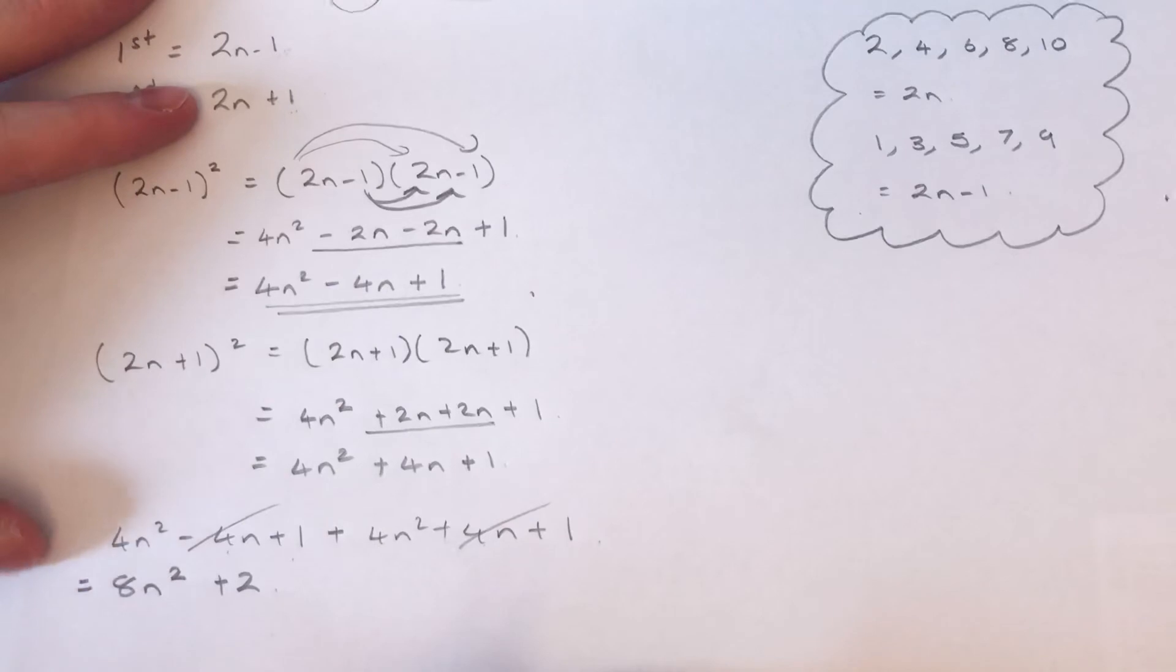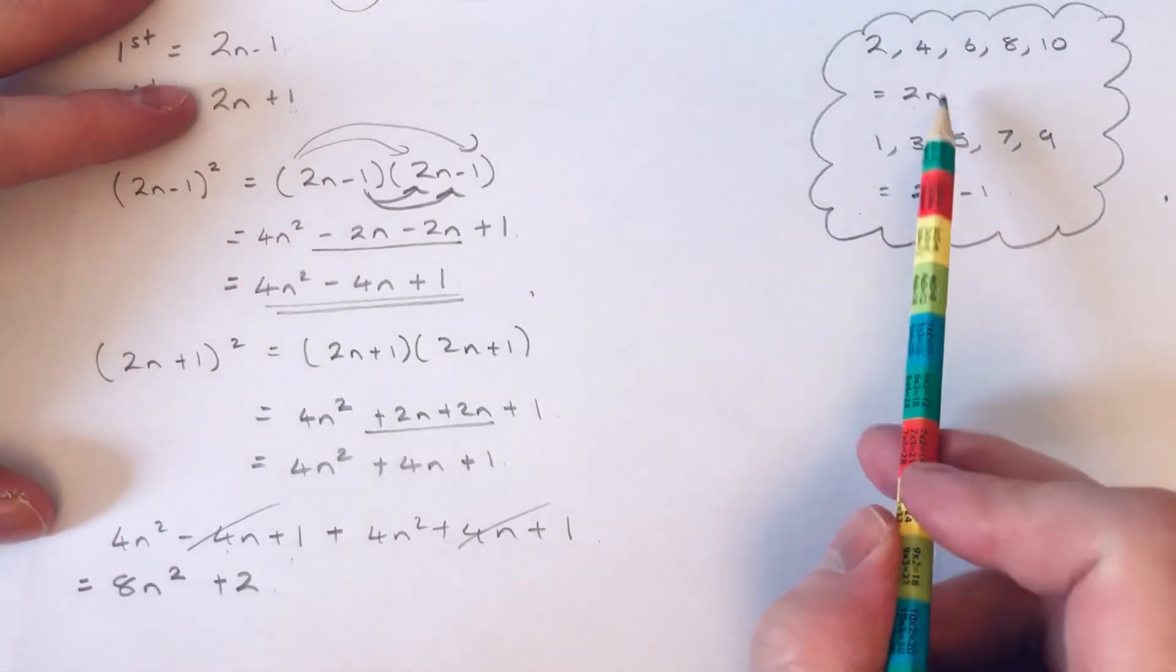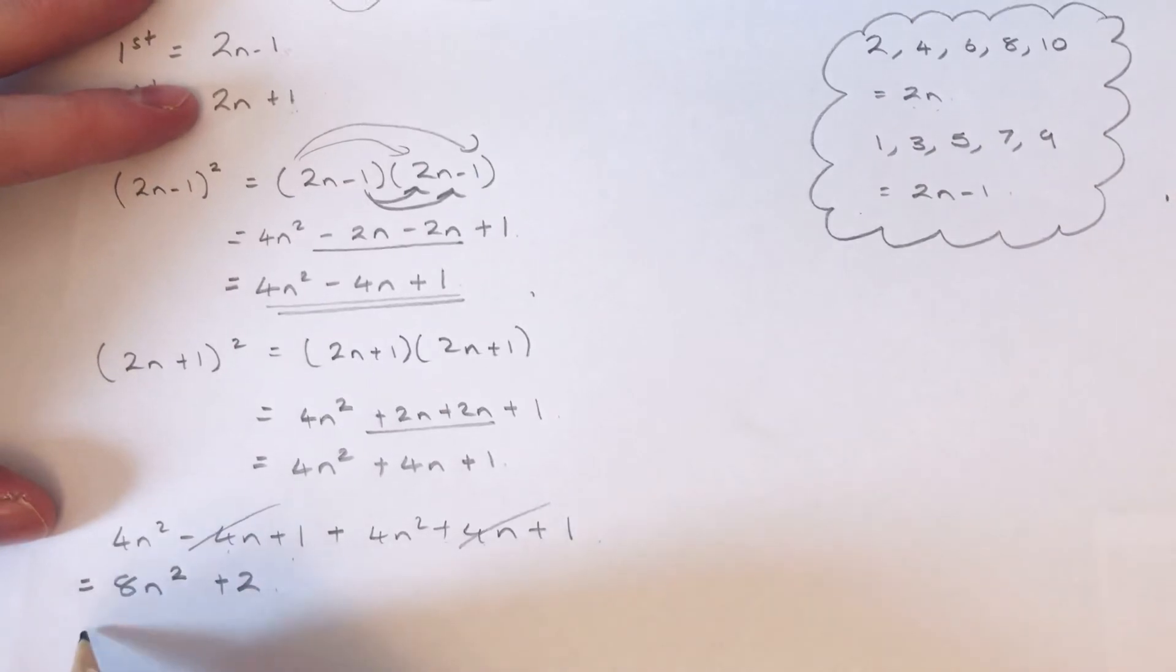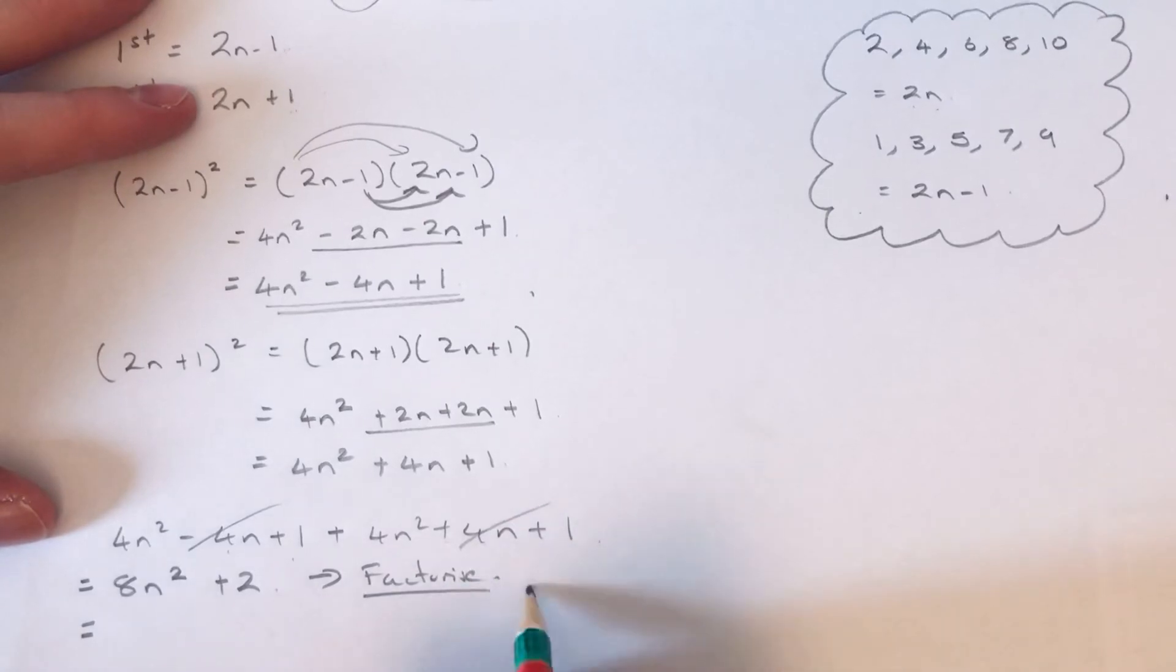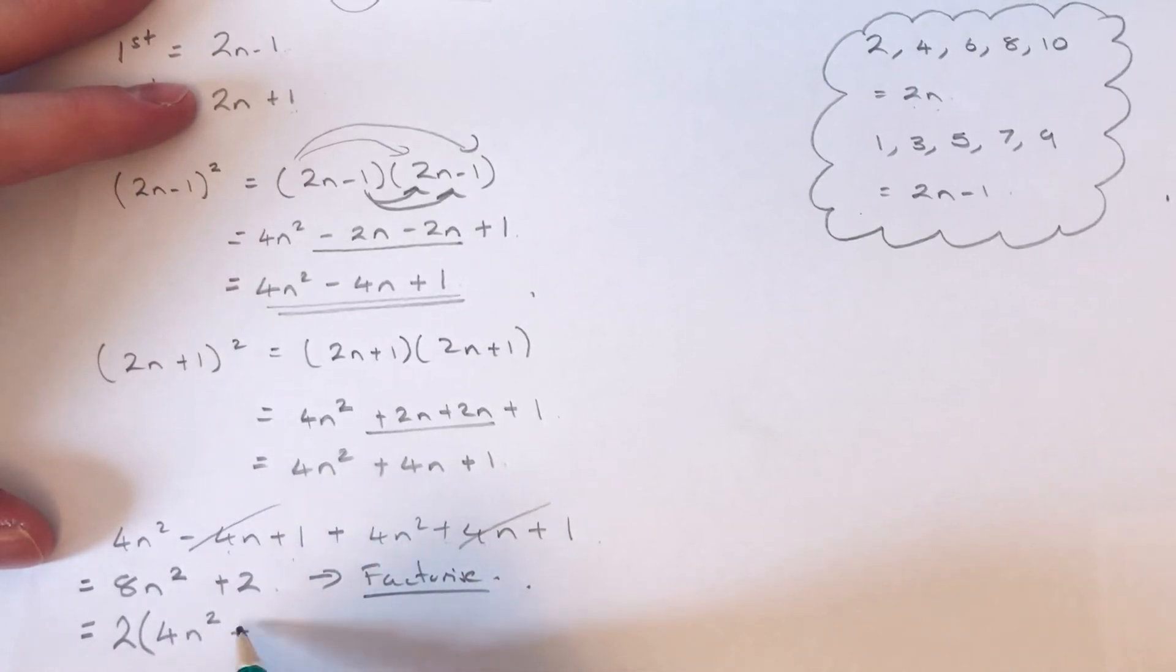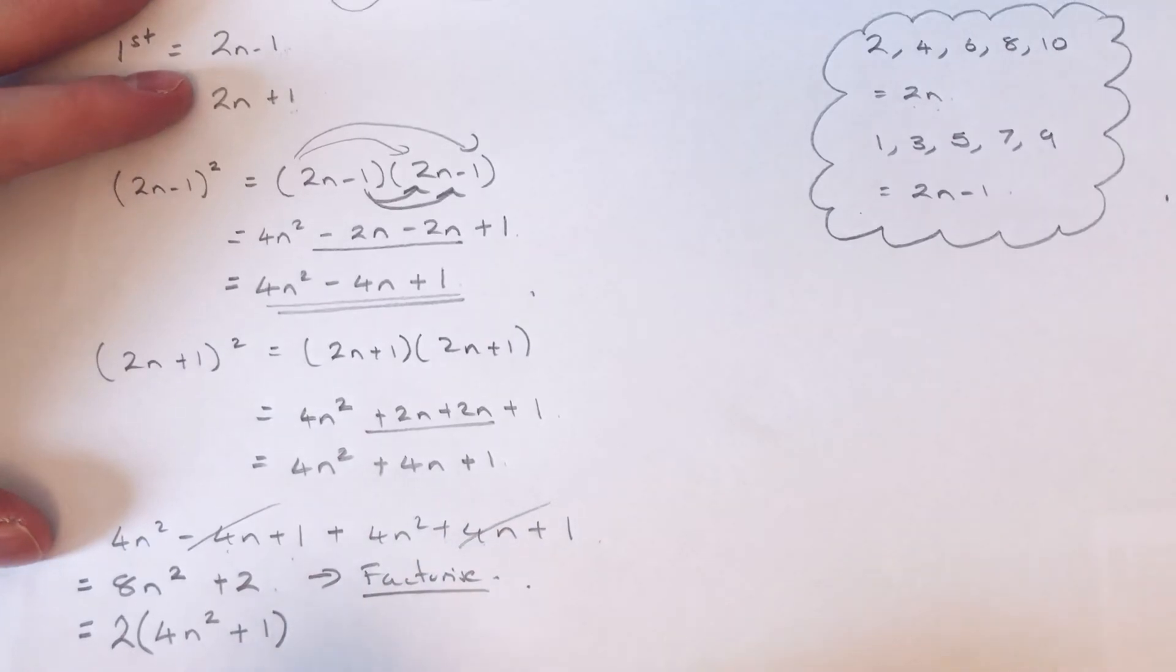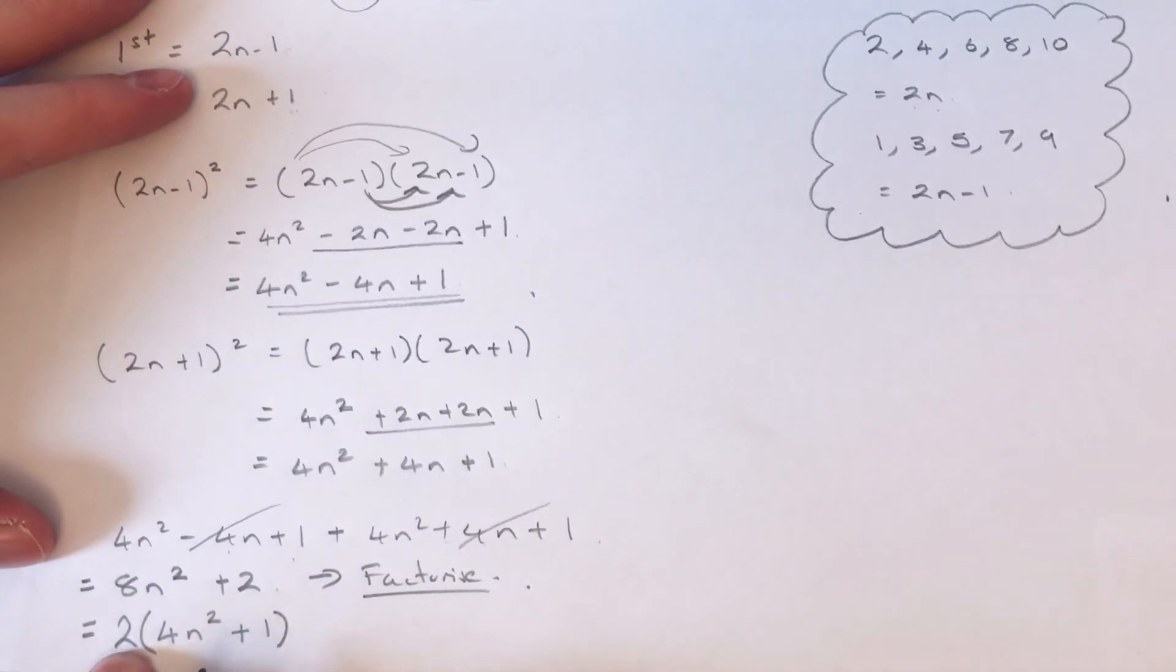So we've now got to show that this is an even number. An even number, remember, is a multiple of 2. So my final step then is to factorize this and just take a factor of 2 out. So we go 2 bracket, and inside the bracket I'm going to have 4n squared plus 1. This proves that we have an even number as we have a multiple of 2 here.